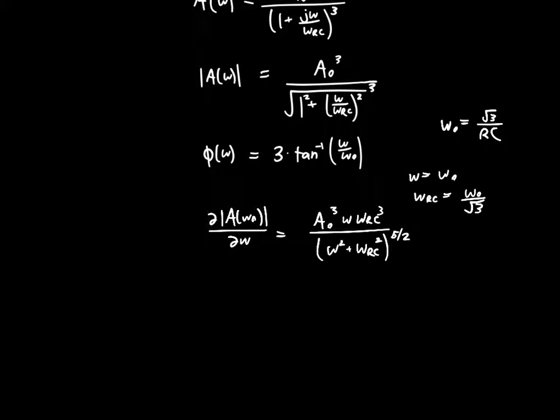And so if you plug those in, and you also plug in the condition that A0 must equal 2, and that was the condition for sustained oscillation, also in our video on the ring oscillator, then we'll get that this derivative is equal to 9 fourths times 1 over omega naught.